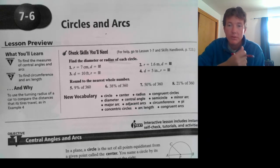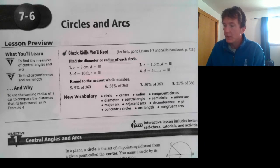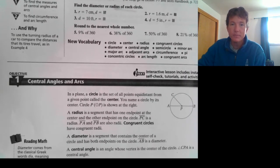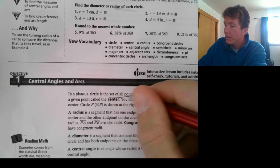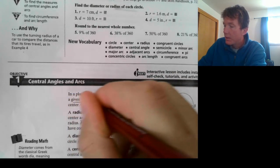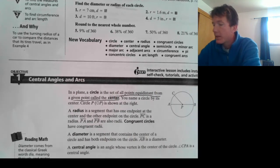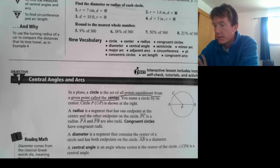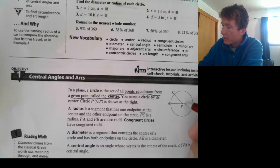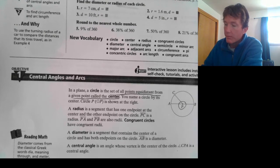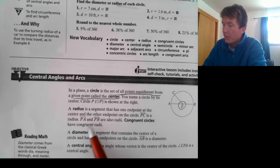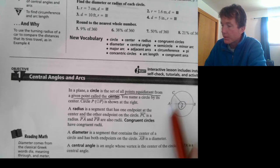Well, you probably are familiar with circles. Let's go over the definition. A circle is the set of all points equidistant from a given point called the center. We name a circle by its center.